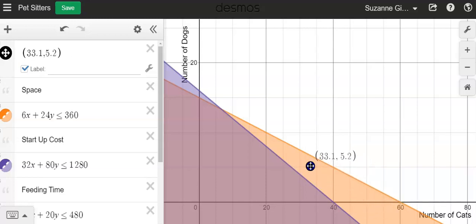these would be the number of cats and dogs. So if I stop on a point, it's about 35 cats and about five dogs. That would meet the requirements for the space, but it's not meeting the requirements for the startup costs. It's too expensive. So all of these points in this region only meet the requirements for the space, but not the startup costs.